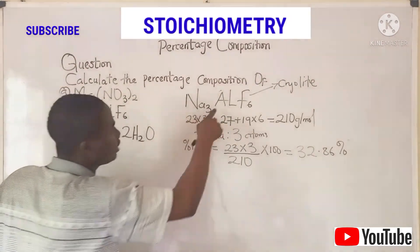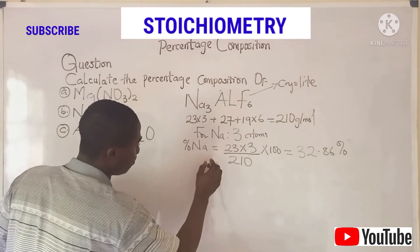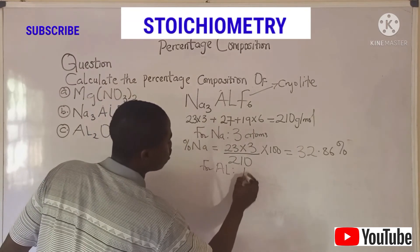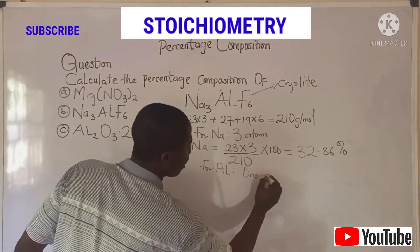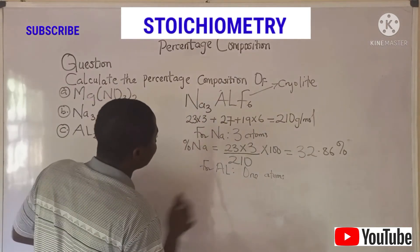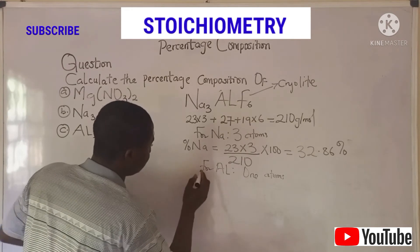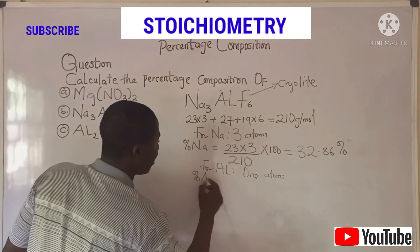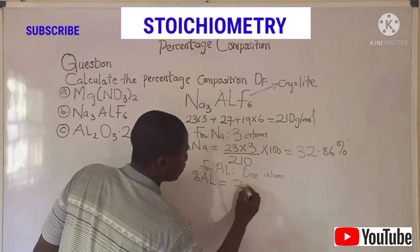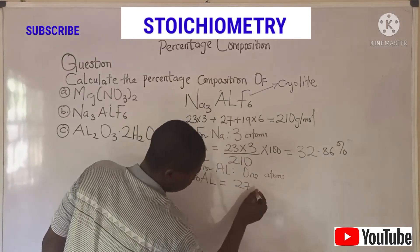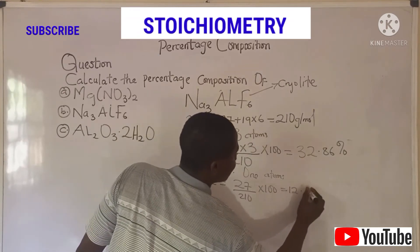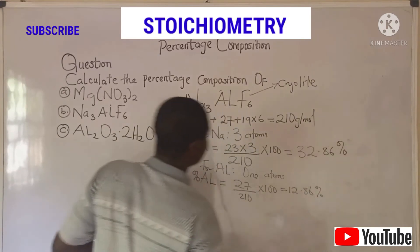Let's quickly calculate the percentage of aluminum in this compound. For aluminum (Al): how many atoms are present? Just one atom. So it is straightforward — the percentage of aluminum equals the atomic mass of aluminum, which is 27, with just one atom, over 210, times 100. We get 12.86%.